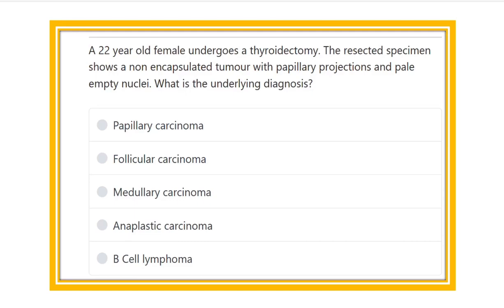A 22-year-old female undergoes thyroidectomy. The resected specimen shows a non-capsulated tumor with papillary projections and pale empty nuclei. What is the underlying diagnosis?